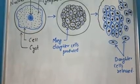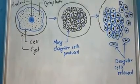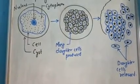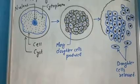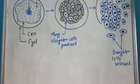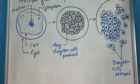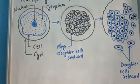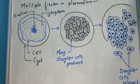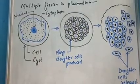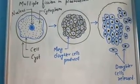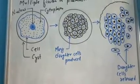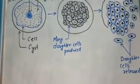Multiple fission में cells का जो rupture होता है, उसे अगली class में analyze करेंगे। The second type of asexual reproduction is budding — उसे भी discuss करेंगे, but in the next class. Till then, you all just write it down in your copy. अगली class में multiple fission कैसे होता है, survival condition क्या होता है, यह भी analyze करूँगा। Till then, take care and goodbye.